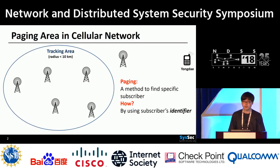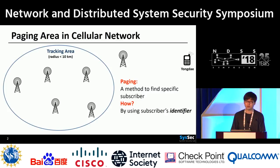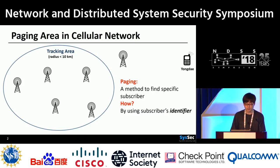Before discussing the vulnerability, let's talk about the background of a cellular network. As you know, a mobile device and a base station communicate through an air interface. Let's take an example of a voice call service in cellular networks. When someone calls one device, all base stations within a tracking area search the device through a procedure called paging by using the device's identifier.